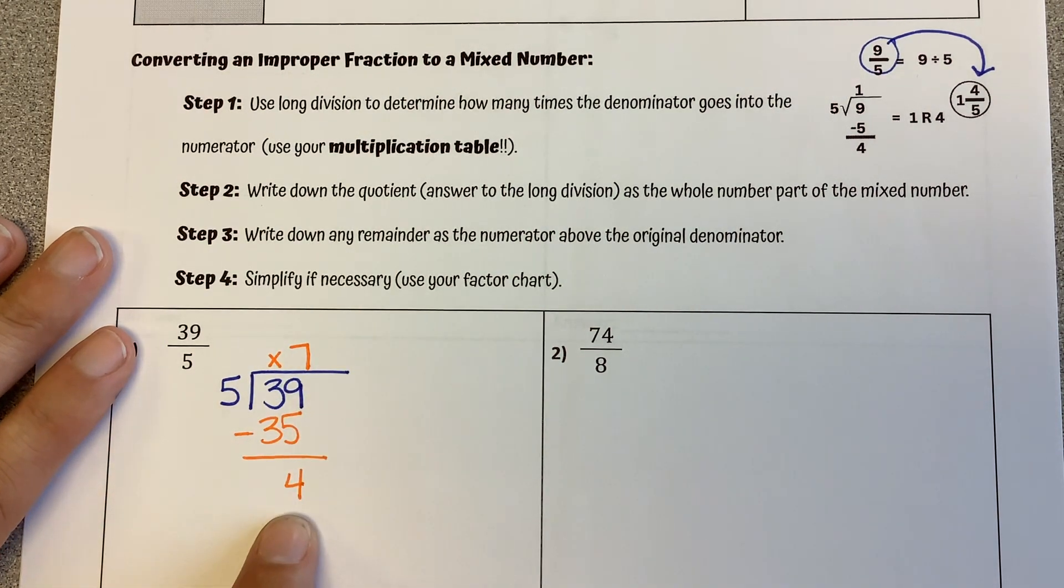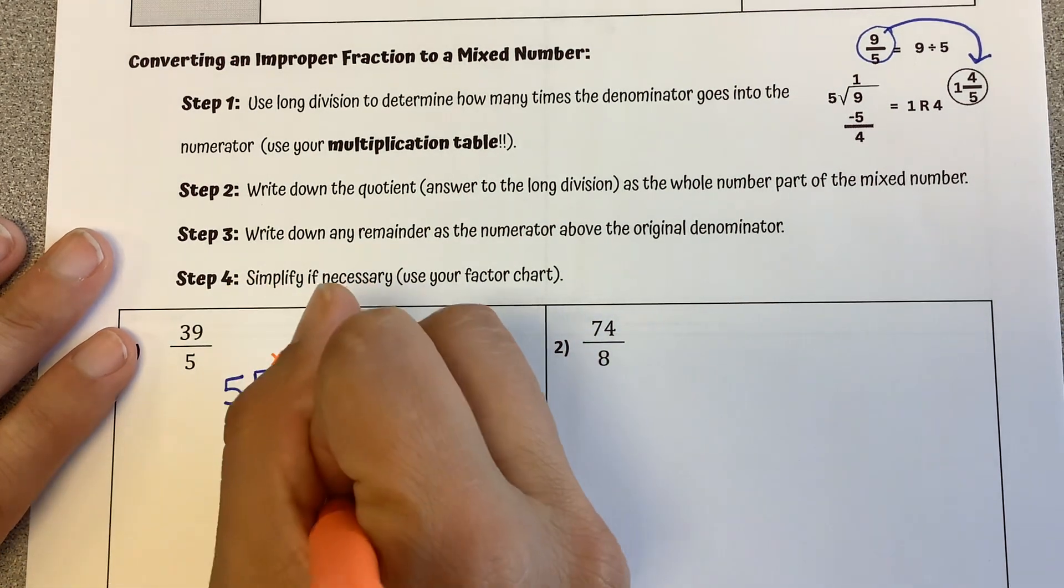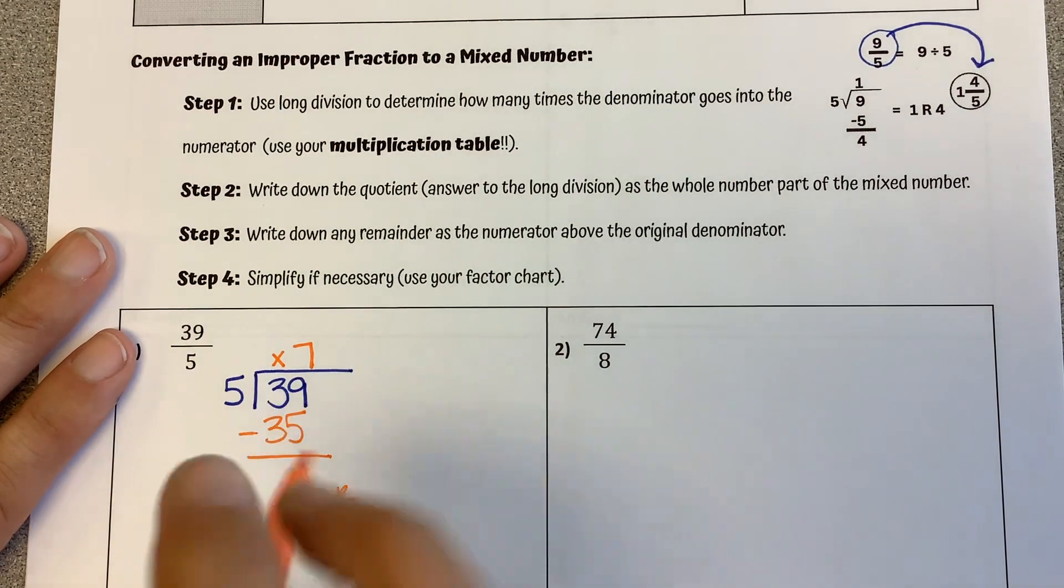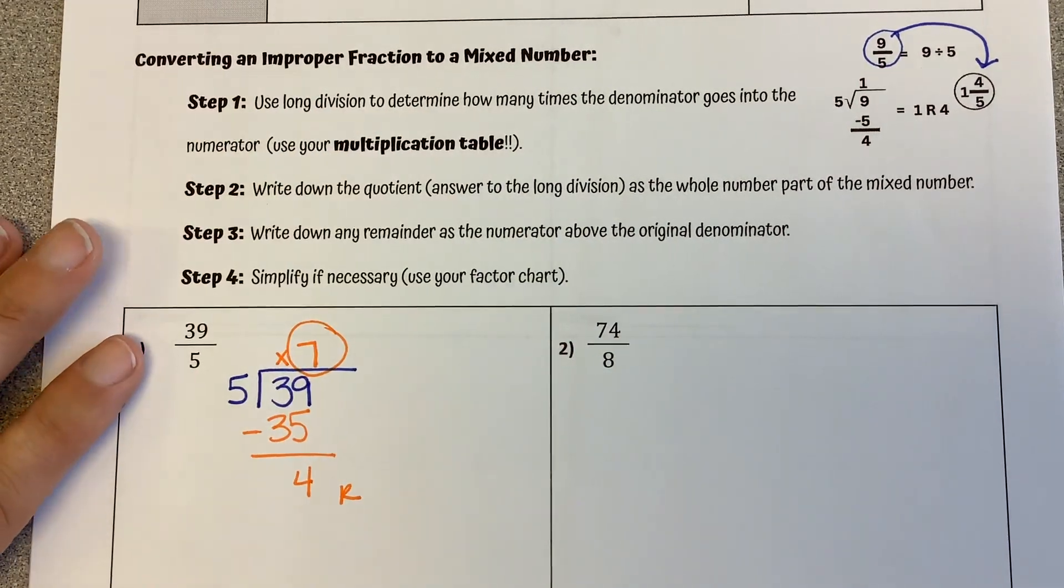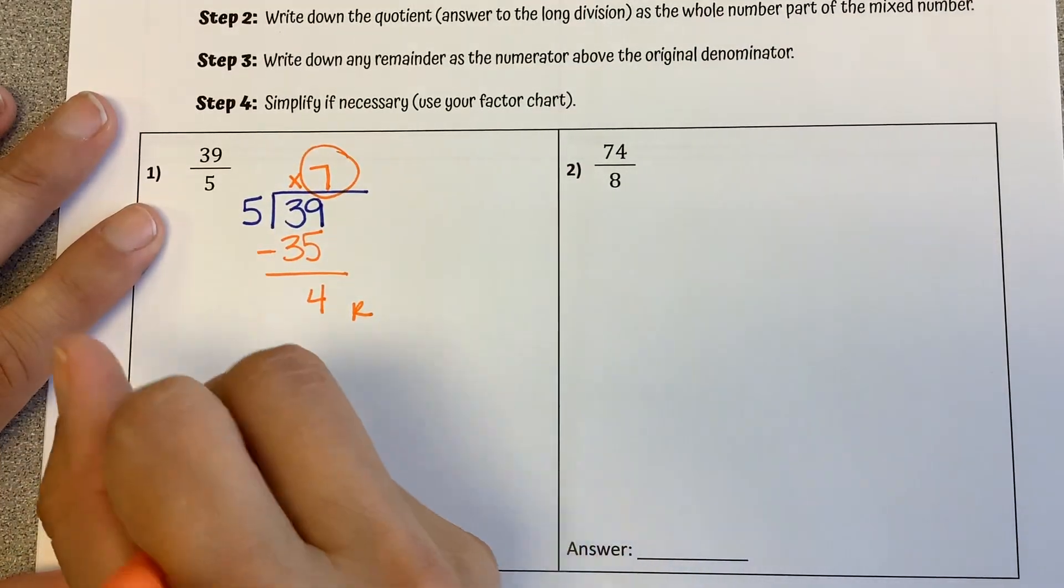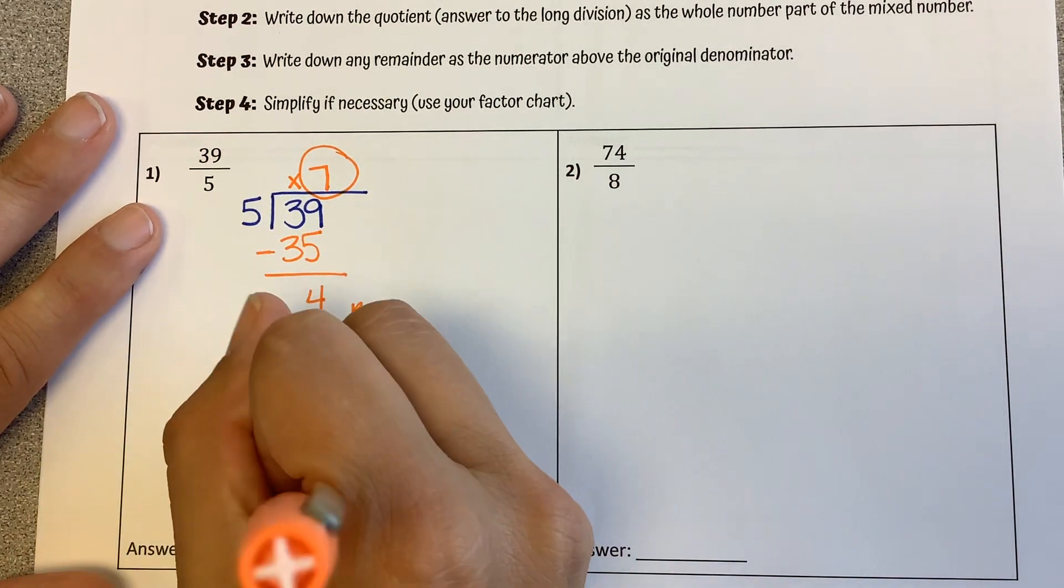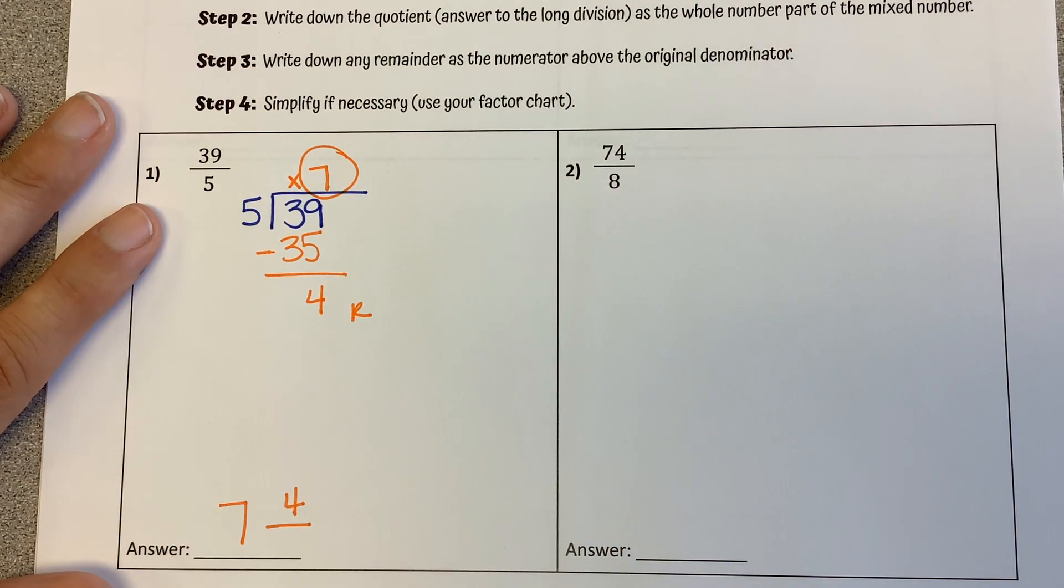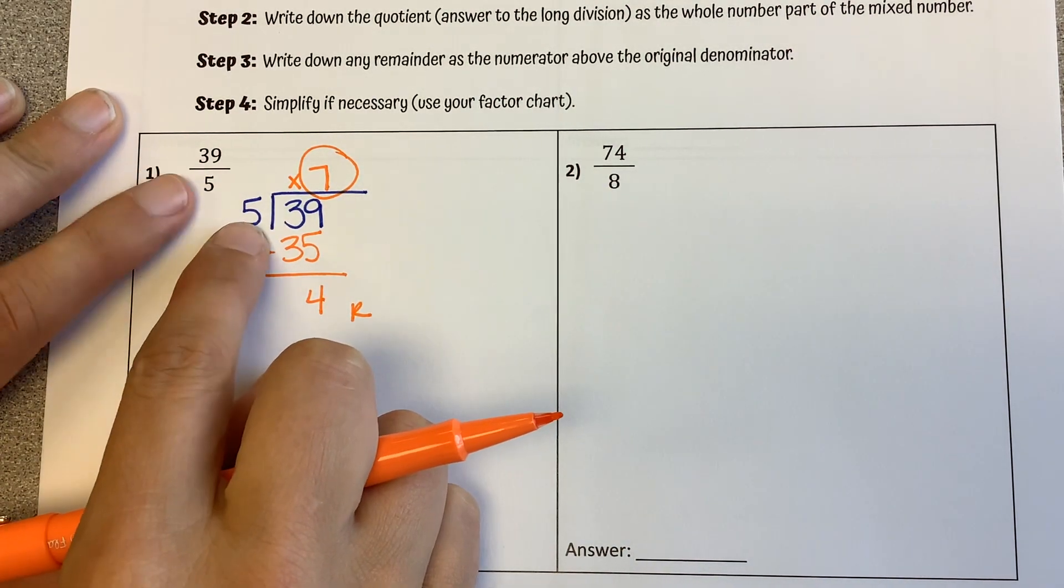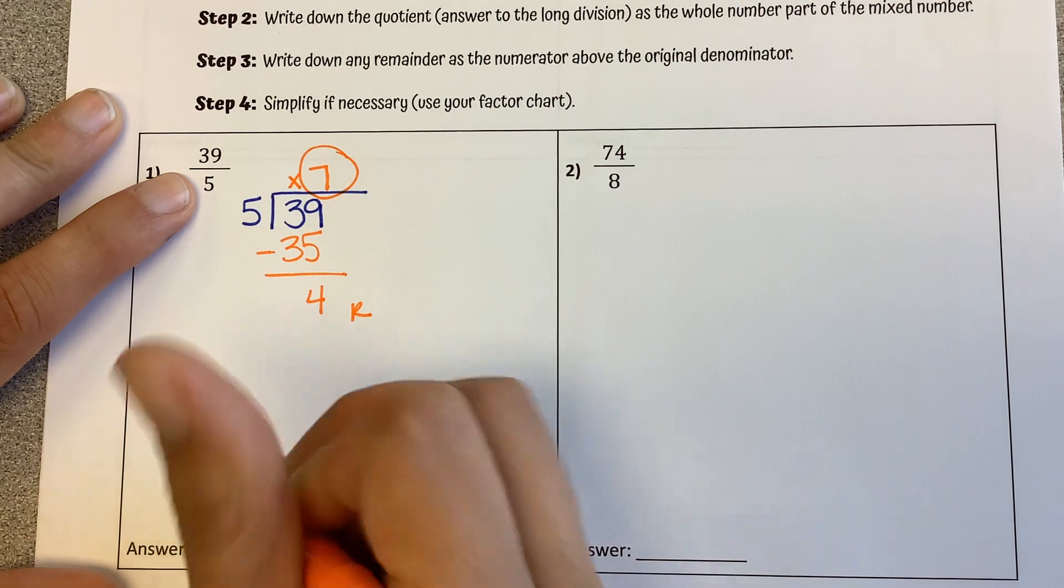We have nothing else left to bring down. So this is our remainder here. So the whole times it goes in of 7 is the whole number. Our 4, that remainder, is going to be the numerator, the top number in our fraction. And our denominator of 5, our original denominator of 5, stays 5.